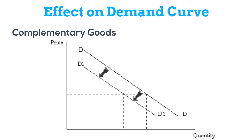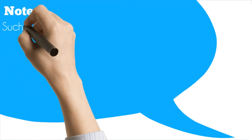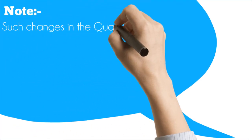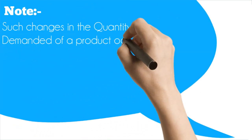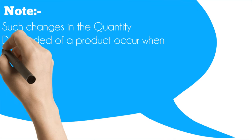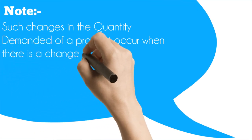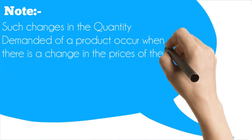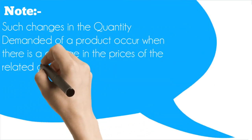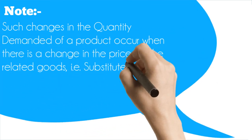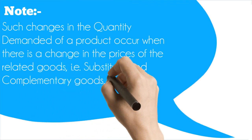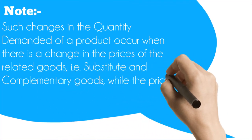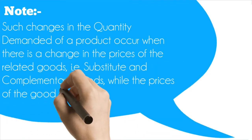Note: such changes in the quantity demanded of a product occur when there is a change in the prices of the related goods — that is, substitute and complementary goods — while the prices of the good itself are kept constant.